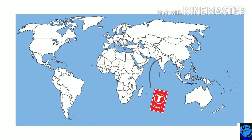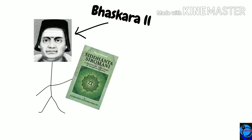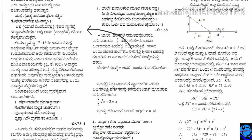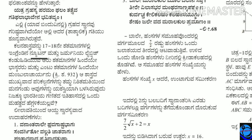India had their share of contributions too. In the 12th century, mathematician and astronomer Bhaskara II wrote the Siddhanta Shiromani, which contained texts in astronomy with proofs using calculus. He proved that at its highest point, the instantaneous speed of a planet is zero. Some English mathematicians called Newton and Leibniz are known for this discovery, even though Bhaskara stated it a few centuries earlier.